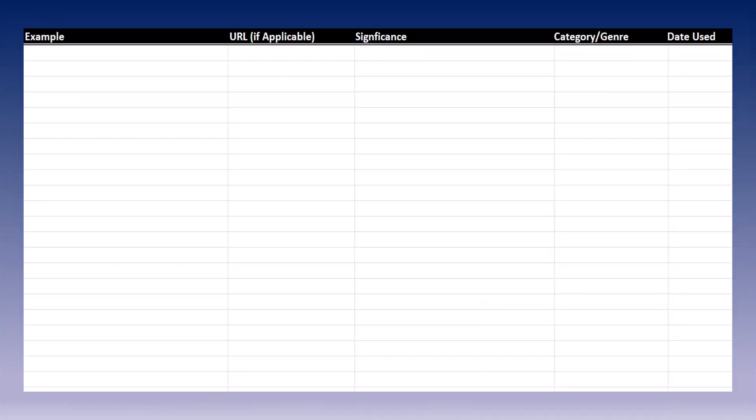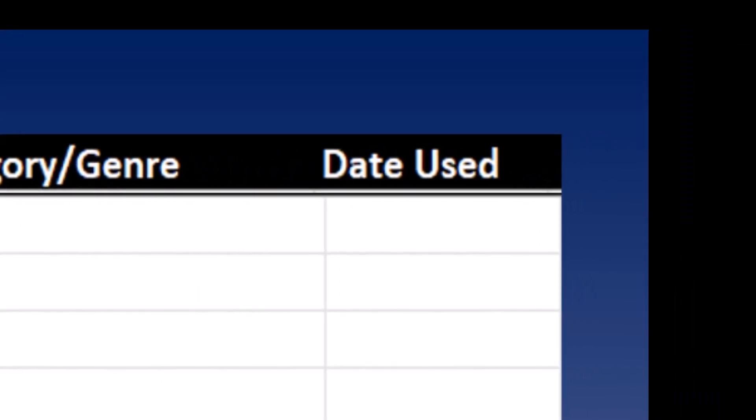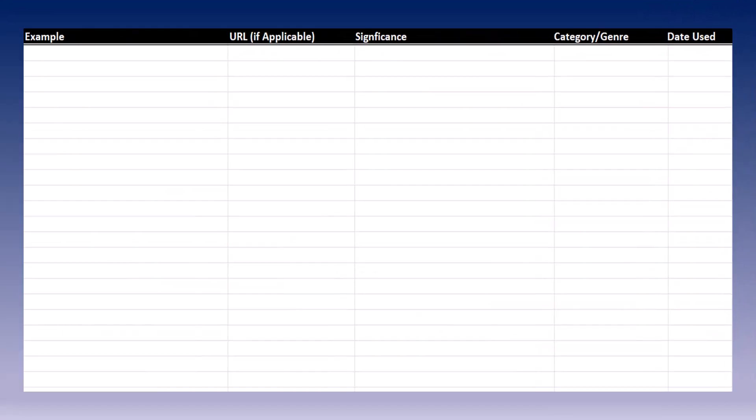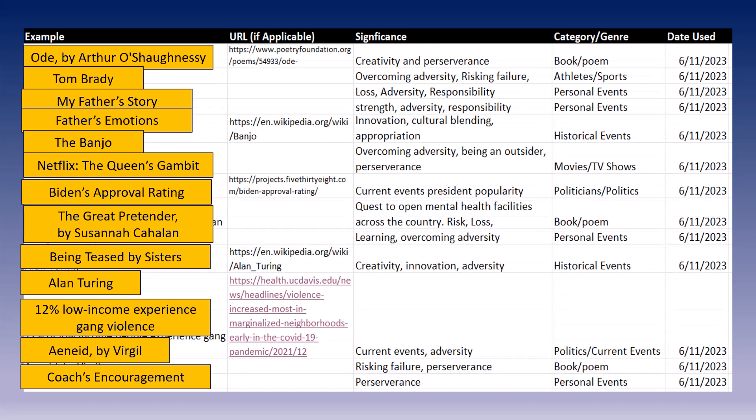When we look at something you would maintain online like an Excel spreadsheet, you would want to record the example you're using, identify the URL if you need to so you can come back and look at it, and probably most important is to identify the significance of the example. This is where we're going to talk about how it shows perseverance or how it shows risk or loss. We would identify the category or genre where it came from - this would be a book or poem or an article that you read. And also, one of the things I want you to do is identify the date that you used it in a tournament. If we put all of the examples into this database, you would put the example here under the example category and then you would fill in the rest. In real life, your example database would look like this.